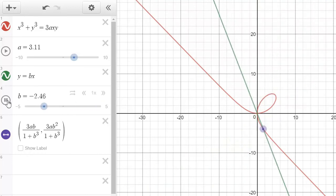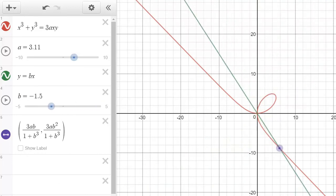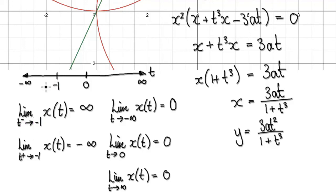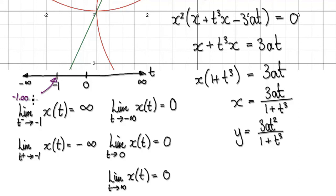So let's try and investigate what's going on by looking at limits. We know that at negative 1 it breaks down. So let's take the limit as t heads towards negative 1 from the left-hand side. What that means is imagine you are heading towards negative 1 from the left-hand side — just to the left of negative 1.